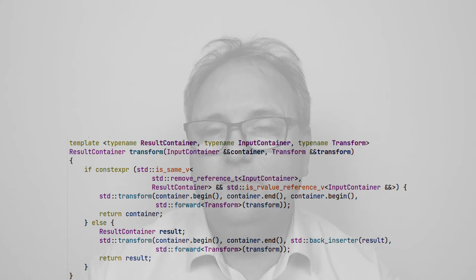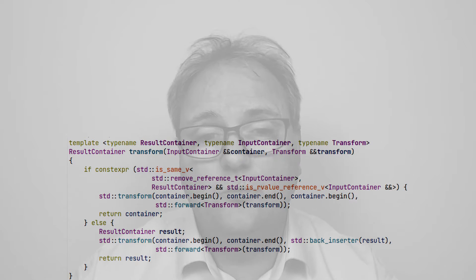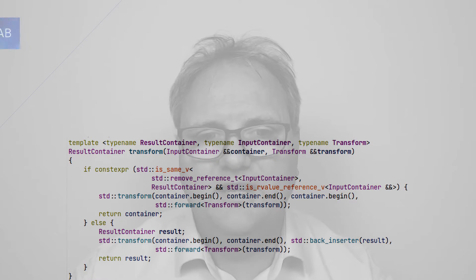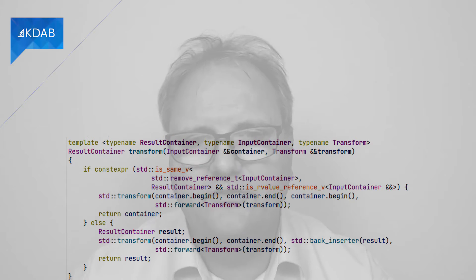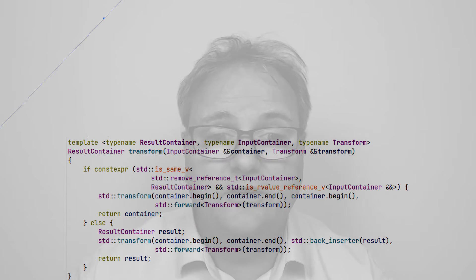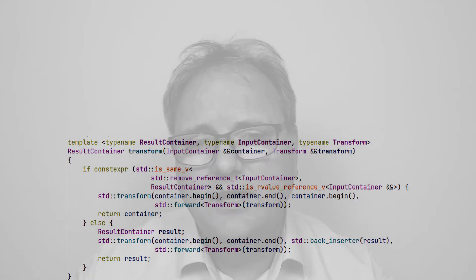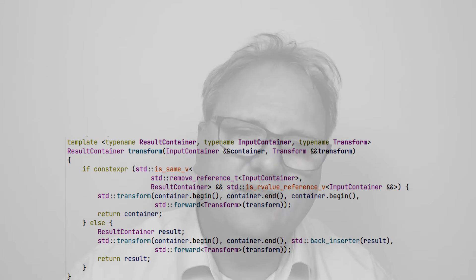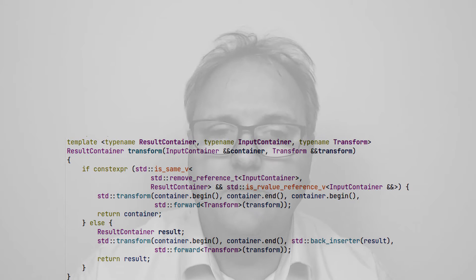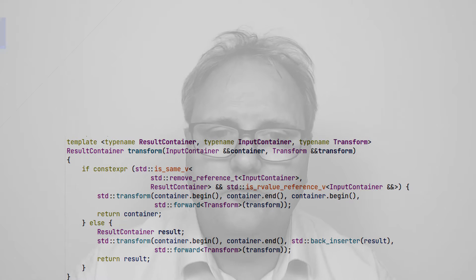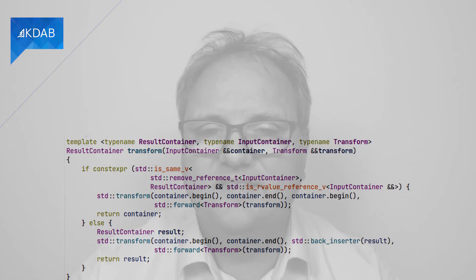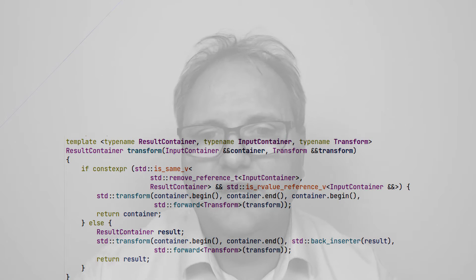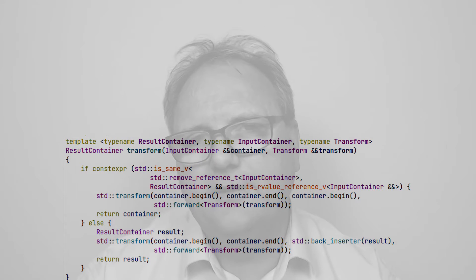The `is_same_v` — that's a type trait. It tests whether two types are the same, namely `std::remove_reference_t<InputContainer>` and `ResultContainer`. And the other thing it tests after the `&&` is `std::is_rvalue_reference_v` and then the container.